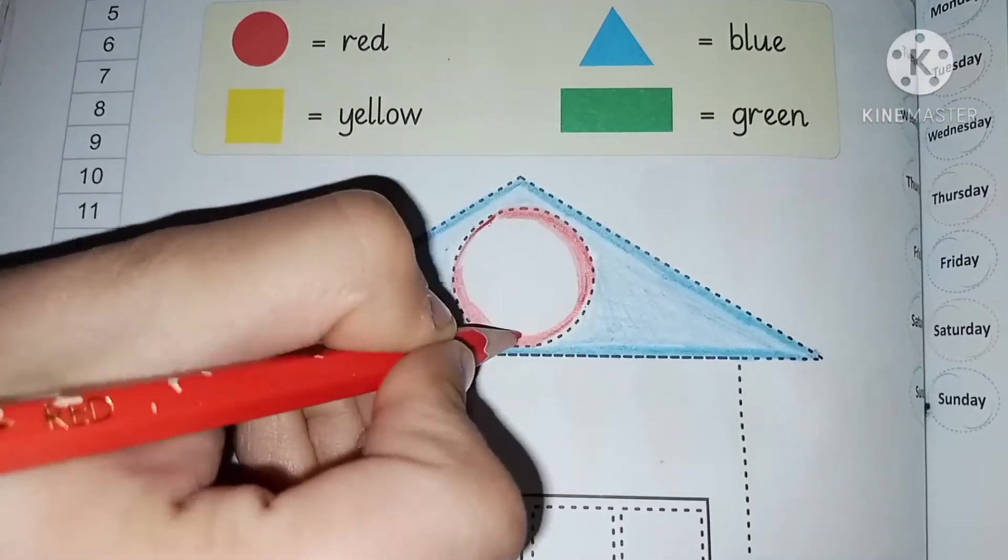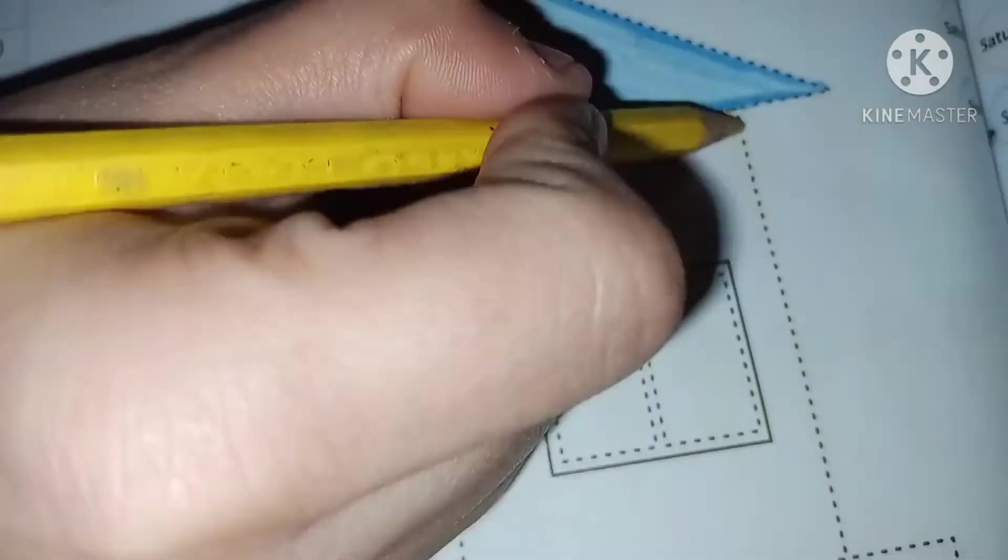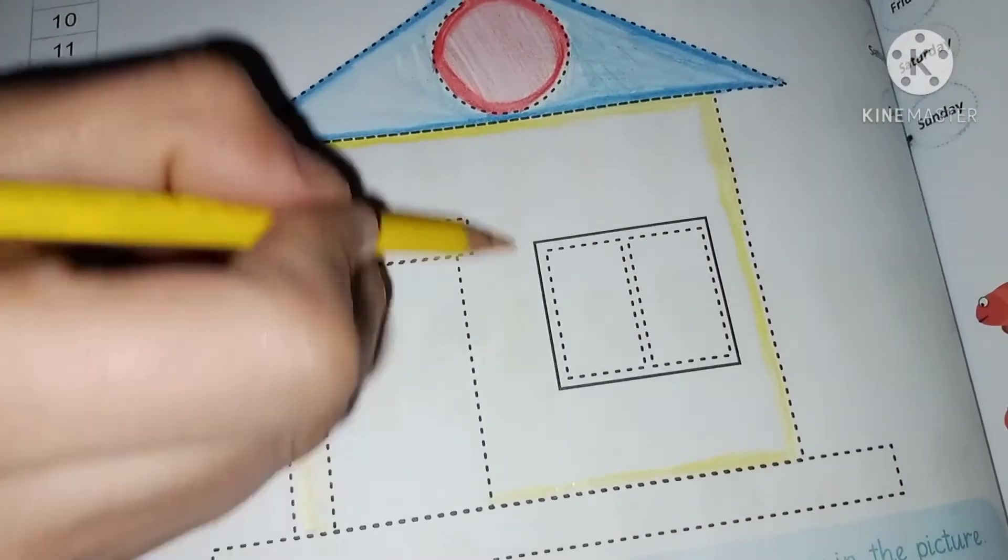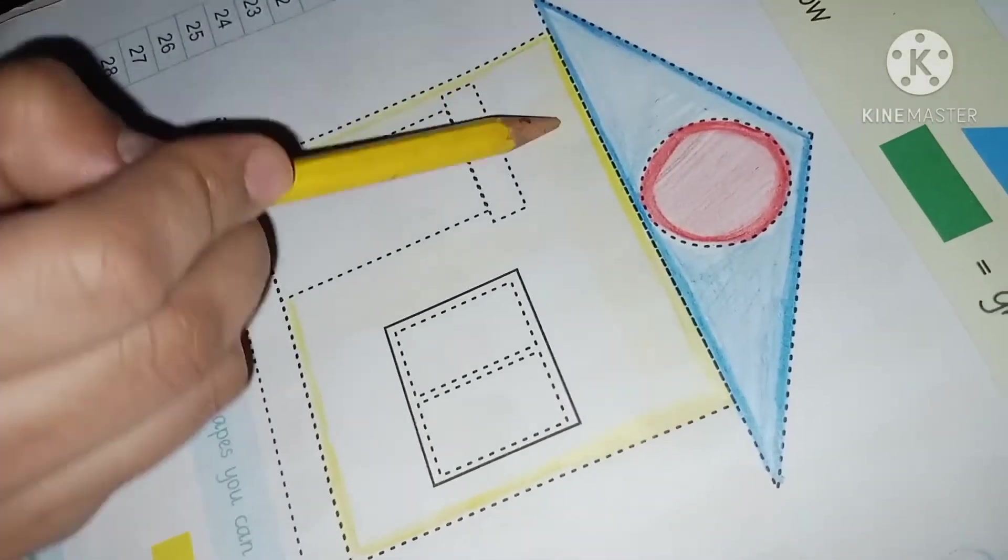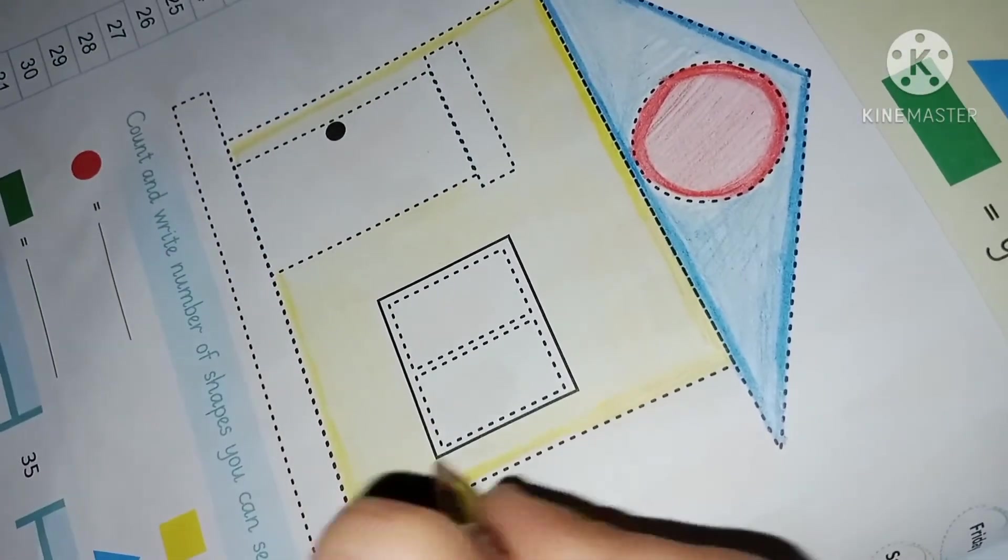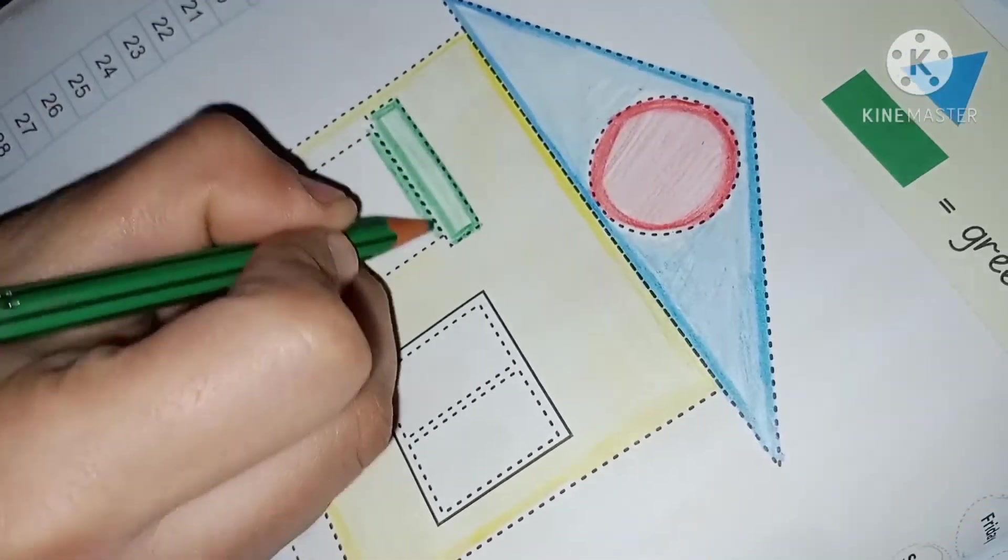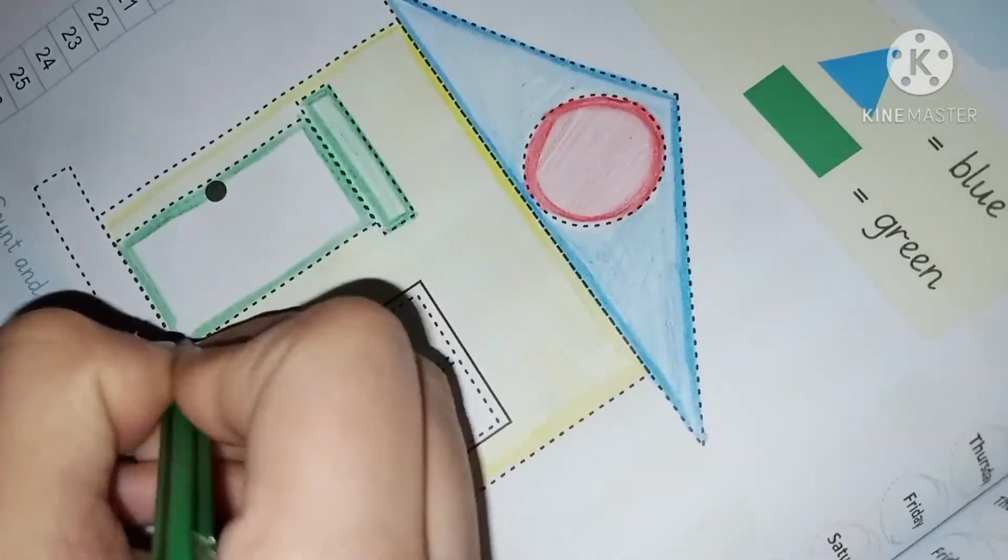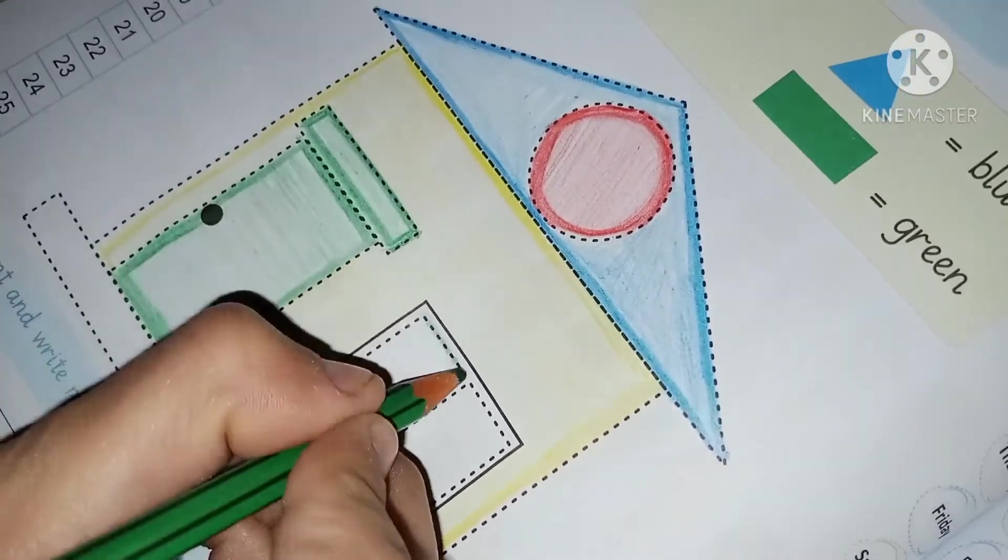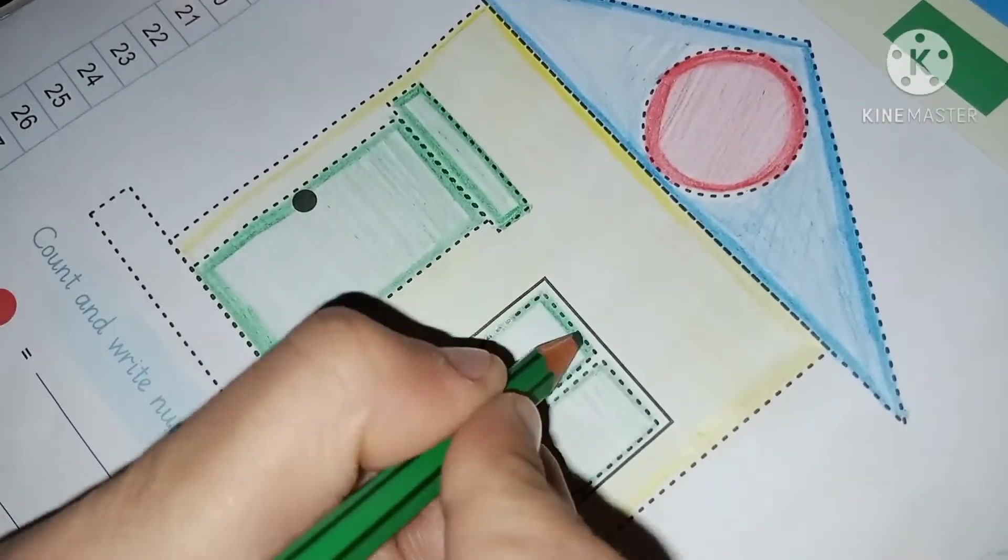Then take red color and do the color inside it. First of all, make dark outline. And take yellow color. Make dark outline. Then light color inside it. Don't skip any details. Next, take green color and make a dark outline in rectangles.